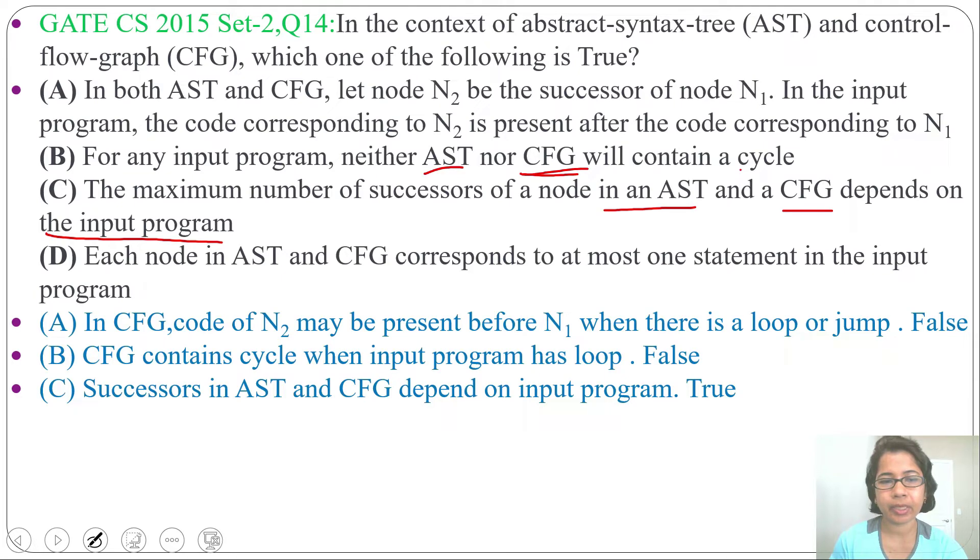Option D: each node in AST and control flow graph corresponding to at most one statement in the input program. This is false. In control flow graph, one block may contain more than one statement.